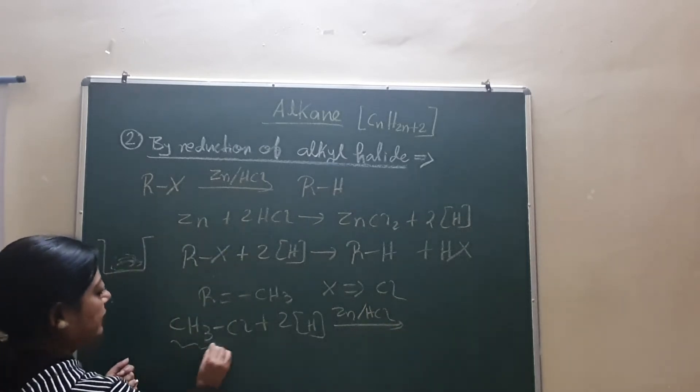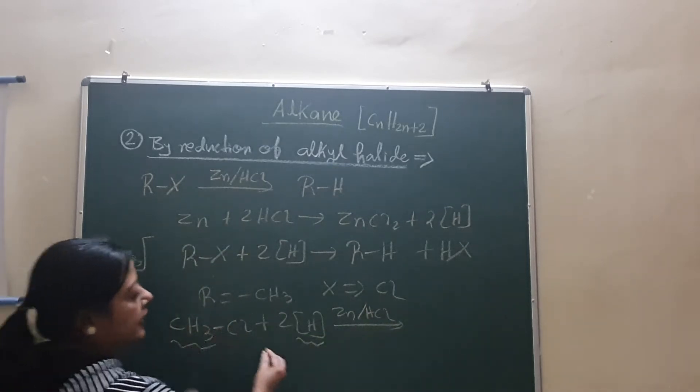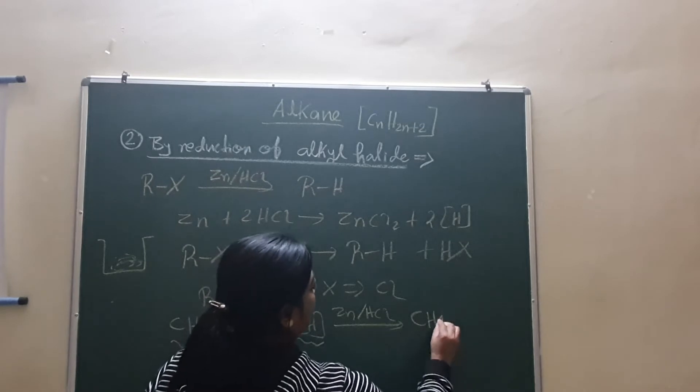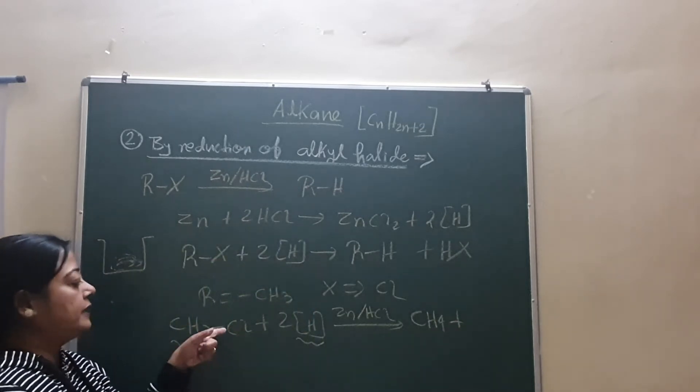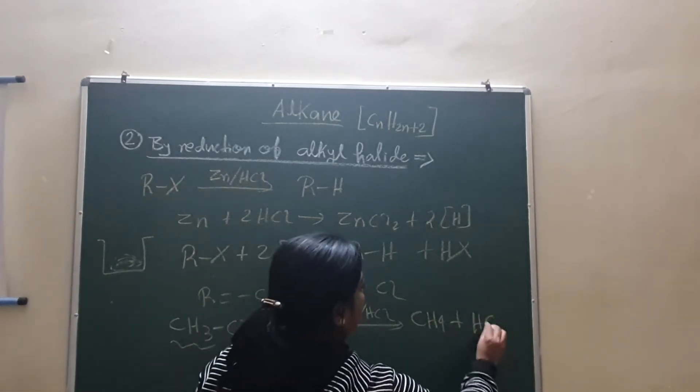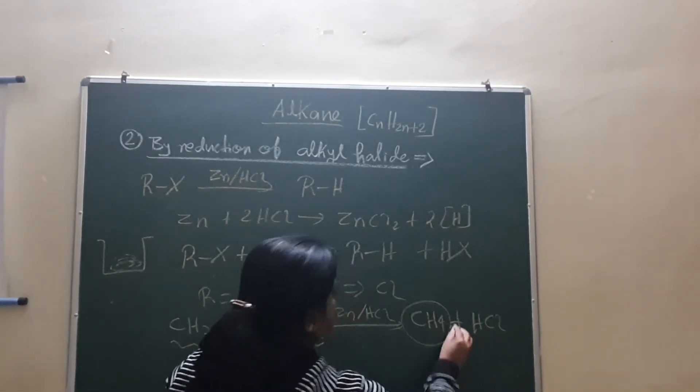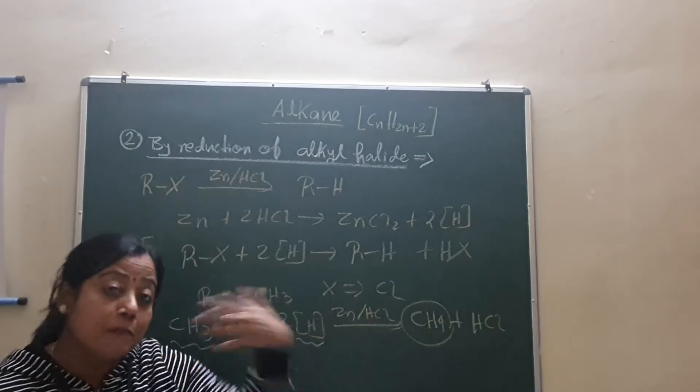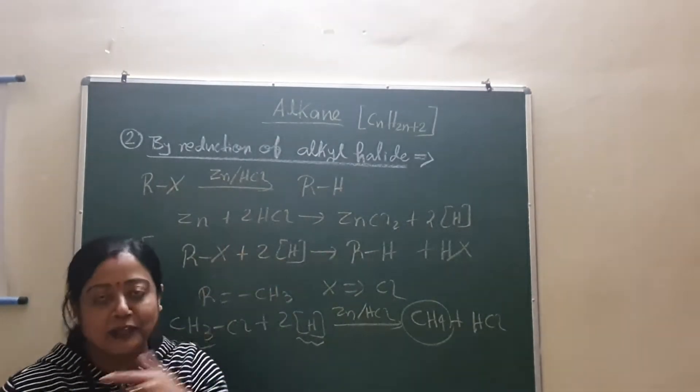Now, suppose R is methyl and X you can think anything - chlorine, bromine, anything. So you get CH3Cl plus these two nascent hydrogen coming from zinc and HCl. Then CH3 and one H combine to make what? CH4. And another hydrogen atom removes chlorine and it will form HCl. So by this method you can prepare methane also, which you couldn't make in Wurtz reaction.